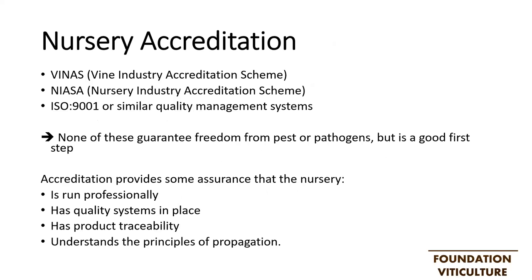The first question to ask of the nursery is: are you accredited? This could be either with VINA, which is the Vine Industry Nursery Association, NIASA which is the Nursery Industry Accreditation Scheme, or a quality management scheme like ISO 9001. Accreditation doesn't guarantee freedom from pest or pathogen, but it does display that the nursery is run with a degree of professionalism, has quality systems in place, has product traceability and understands the principles of propagation. For me, accreditation is a good first step to minimizing your risk.